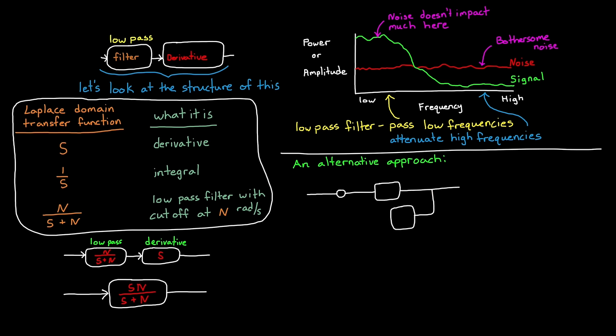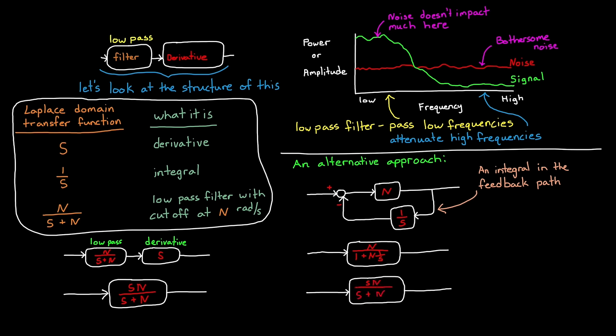Instead of a low pass filter in series with a derivative, we can create a feedback loop with n in the forward path and an integral in the feedback path. This might not look like the same logic, but we can reduce this block diagram to a single transfer function, n over 1 plus n times 1 over s. And then move the s around to get s times n over s plus n, which is exactly equal to what we had before.